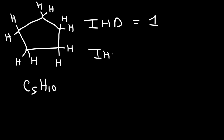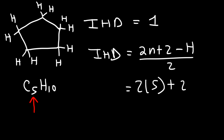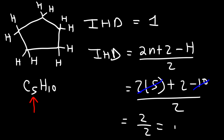Using the IHD formula: (2n + 2 − H) / 2, with n = 5: (2×5 + 2 − 10) / 2 = (10 + 2 − 10) / 2 = 2/2 = 1. So a ring has an IHD of 1.